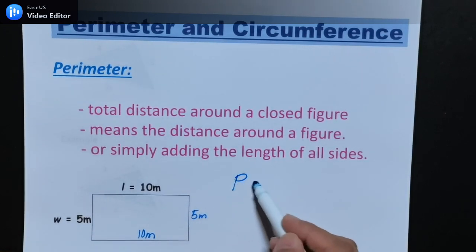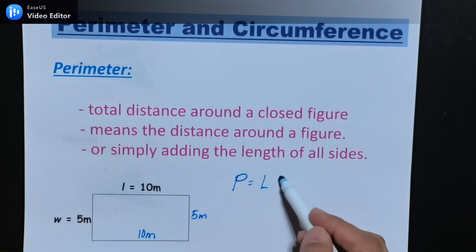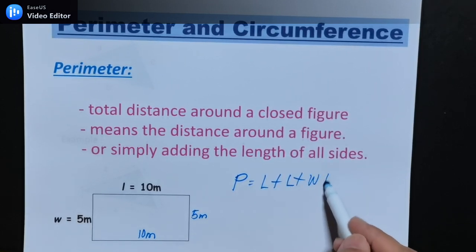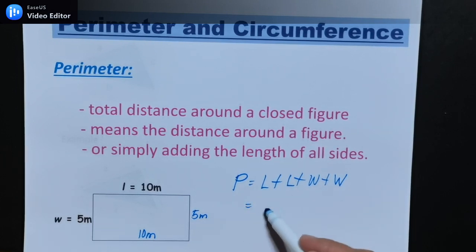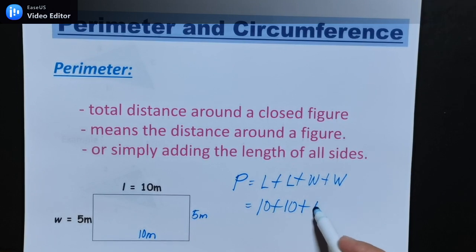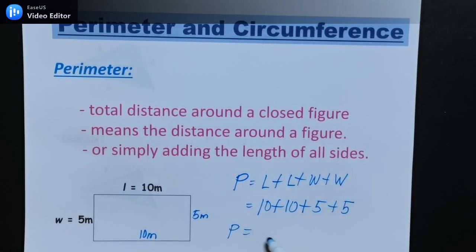Solving for the perimeter: length plus length plus width plus width. So, given: 10 plus 10 plus 5 plus 5. The perimeter is equal to 30.